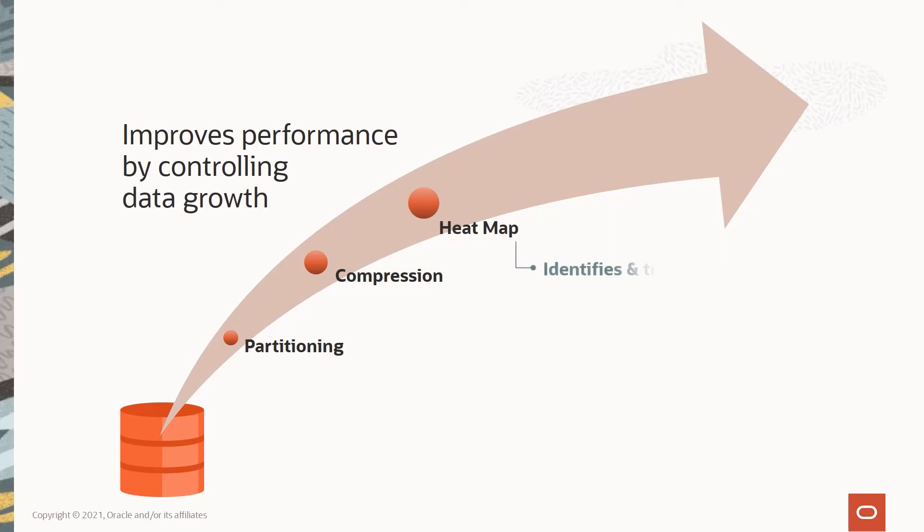Heatmap lets us identify and track data usage patterns so we can categorize our data. For example, we might tag our data as hot, warm, or cold, depending on when it was last updated or read. These capabilities enable us to optimize our ILM strategy and drive automation.